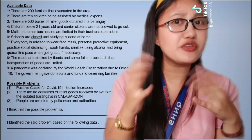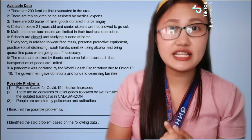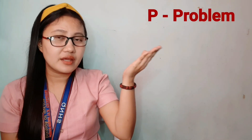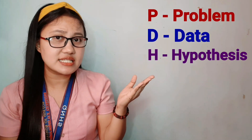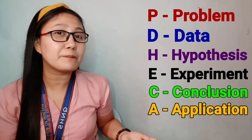So ganun din yung gagawin nyo — ikaw naman, for example, kung pinili nyo yung problem number 2, ano kaya yung mga 3 data that will support your answer? There are 6 components that you need to understand in scientific investigation. Ano-ano ba yung 6 na yun? Meron tayong 6 steps, at ito yung may acronym na PDHECA — P, D, H, E, C, and A. P stands for problem, D for data, H for hypothesis, E for experiment, C for conclusion, and A for application. That's why we have the PDHECA.